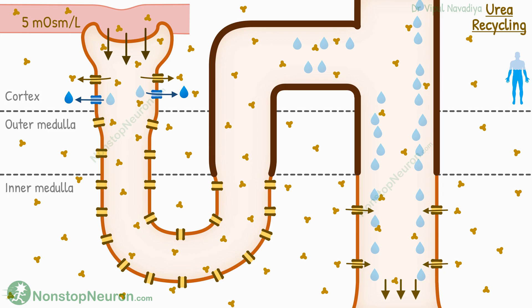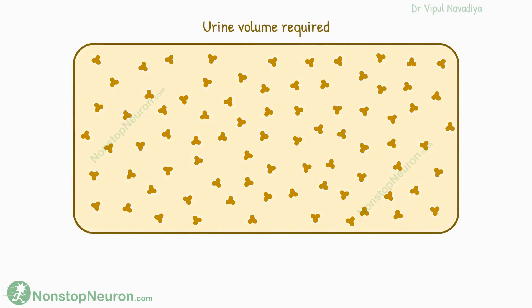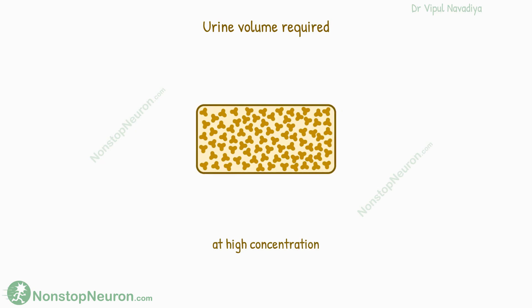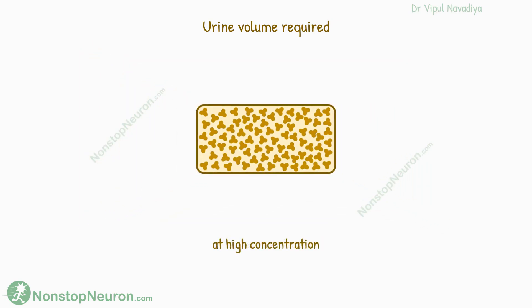So that was the discussion of how urea gets concentrated in the medulla. But we haven't answered an important question yet: what is the importance of doing all this? There are two answers. First, this allows the kidneys to excrete urea at very high concentrations. Urea is a major metabolic waste product, so a huge load needs to be excreted in urine every day. Excreting it at high concentration allows the kidneys to excrete the daily urea load in a relatively small volume of urine. If the kidneys tried to excrete this much urea at a low concentration, they would need to produce a much larger volume of urine just to get rid of urea alone.